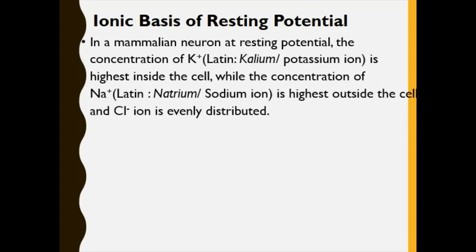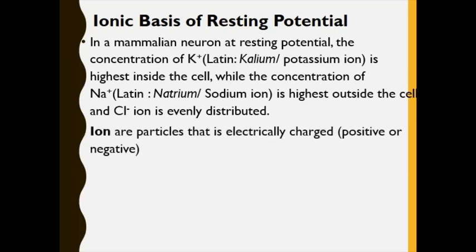Now we discuss the ionic basis of resting potential. In a neuron at resting potential, the concentration of potassium is highest inside the cell, sodium is highest outside the cell, and chloride ion is evenly distributed. These ions — potassium with positive charge, sodium with positive charge, and chloride with negative charge — are responsible for the activities of the neuron and the sending of nerve impulses.